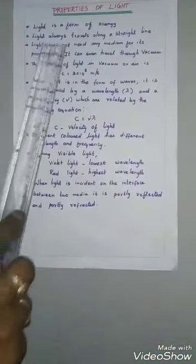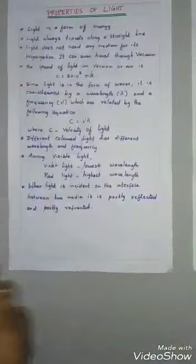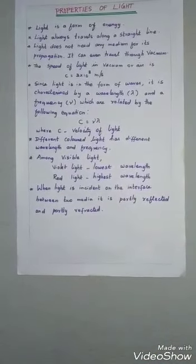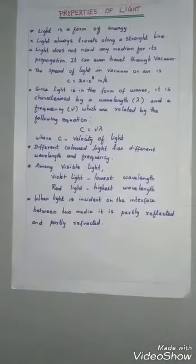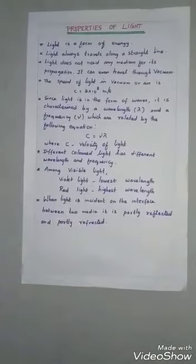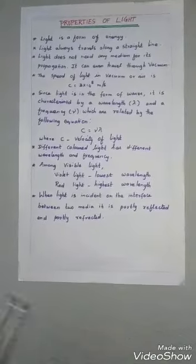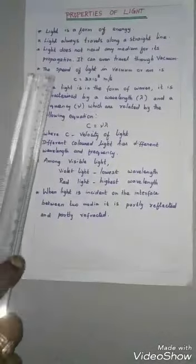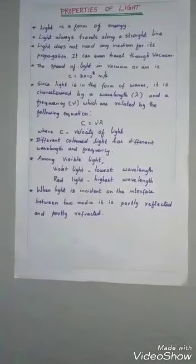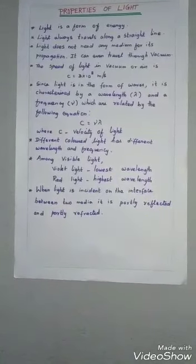Second, light always travels along a straight line. For this example, light a candle and if you see the candle light using a pipe, you can see the light. If you bend the tube and now you see the light, you cannot see the candle light.